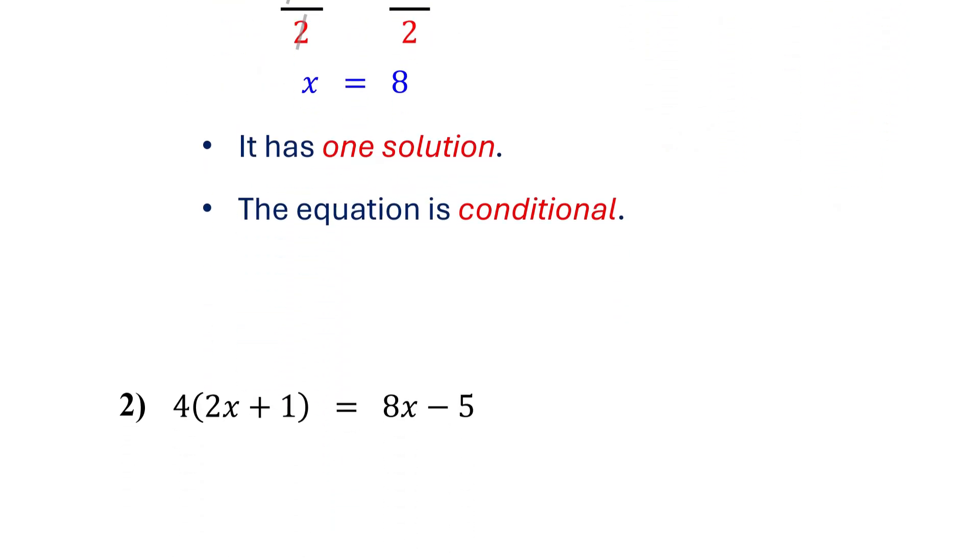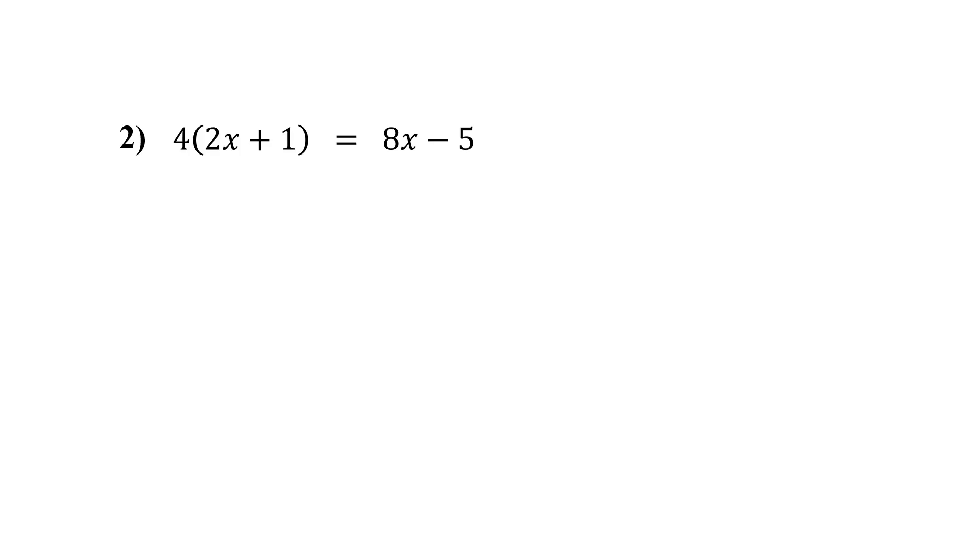Now let's see what kind of equation our second example turns out to be. Since we have parentheses on the left side, our first step is to get rid of them using the distributive property. So we distribute the 4 to both terms inside. 4 times 2x is 8x, and 4 times 1 is 4. Bring down the rest of the equation.